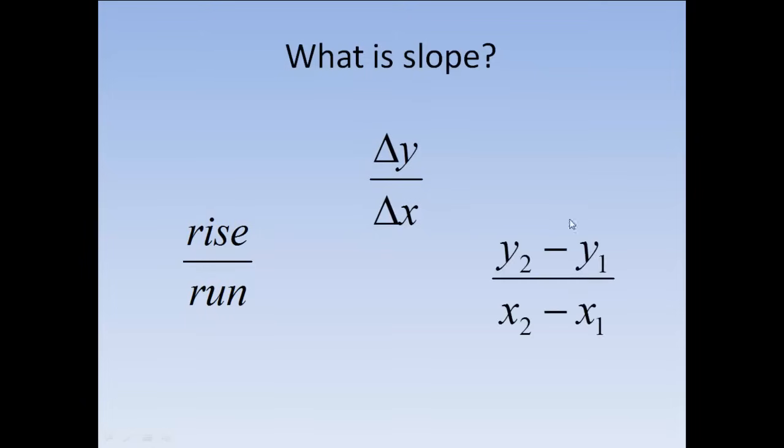Or maybe the slope formula pops to mind, y sub 2 minus y sub 1 over x sub 2 minus x sub 1. Notice that all three of these things are ratios. It's the ratio of rise to the run, the ratio of the change in y to the change in x, which is the same thing this says. They're all ratios.